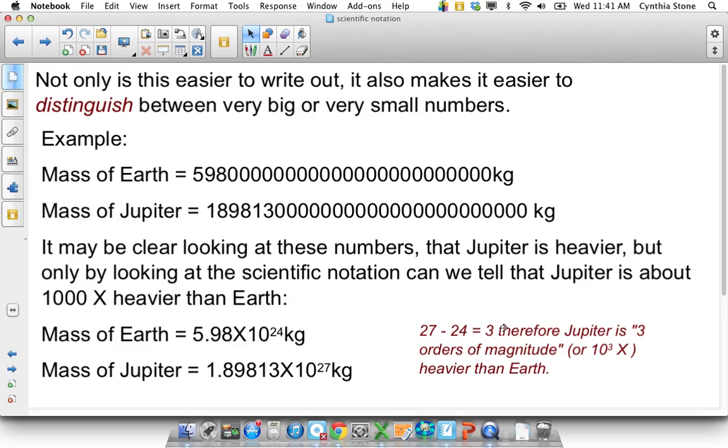because 27 minus 24 is 3, the 3 means it's 10 to the 3, and 10 to the 3 is just a thousand, 10 times 10 times 10 is a thousand. So I can look at that and say Jupiter is about a thousand times bigger than earth. But looking at this, I can't do that, at least not very quickly.